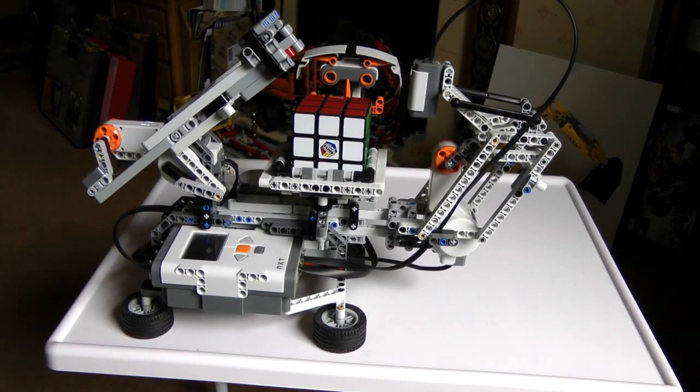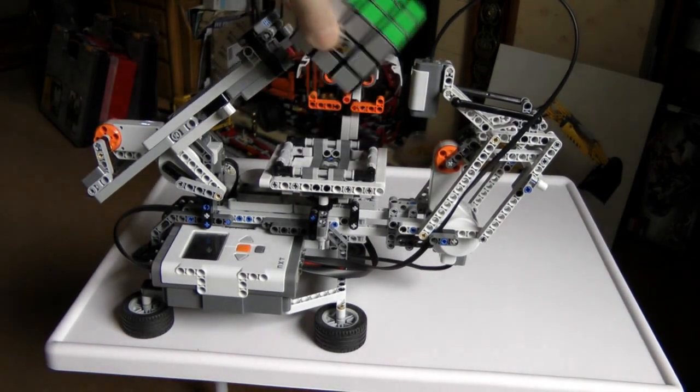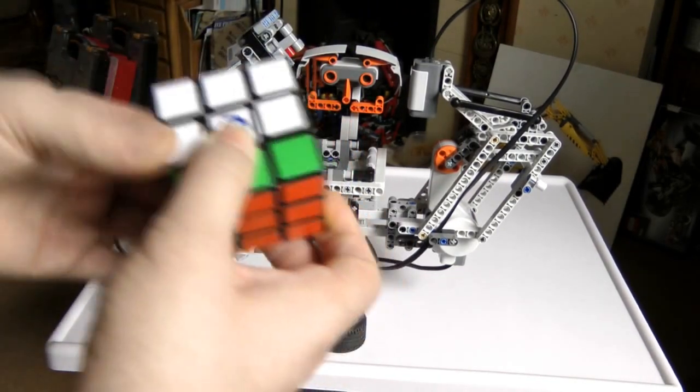Now some of you will probably have seen the other Rubik's Cube solver, Tilted Twister, that I created when I first got my Mindstorms NXT set. This one I have found is a lot faster than the Tilted Twister. It's by David Gilday.